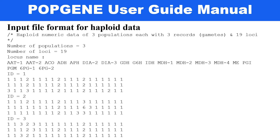For the haploid data input file format, the first line is the title or data type, the second line is the number of populations, the third line is the number of loci, and the fourth line lists the locus IDs column-wise. This haploid data set has three populations and 19 loci. Each population is labeled ID1, ID2, ID3; if you don't know population names, just keep an empty line between populations and Popgene will handle it.